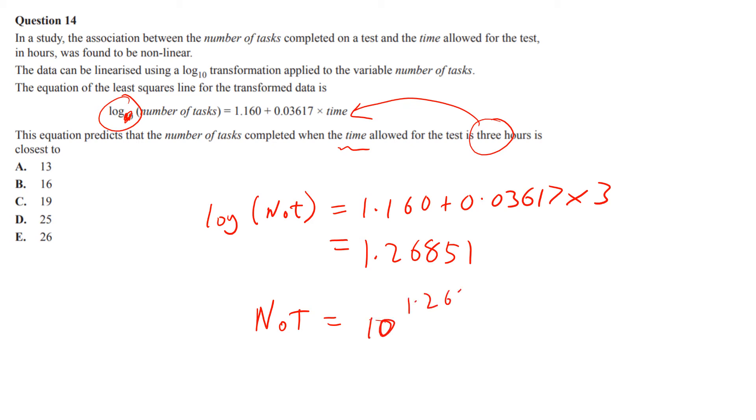Just stick it in your calculator. If you're using one of your fancy class pads, do 10 hat 1.26851. Some of these later decimal places aren't that necessary. Just remember that's calculator talk, don't talk to your teachers that way. Once you've done that, it rounds off to about 19.